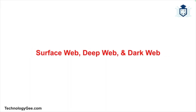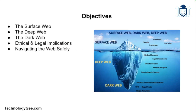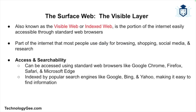What's up everybody, this is Tech G back with another video. In this video I'm going to be explaining the differences between the surface web, the deep web, and the dark web. The internet is a vast and complex network of interconnected systems hosting a staggering amount of information, and it can be divided into three main layers, each serving different purposes with varying levels of accessibility and content.